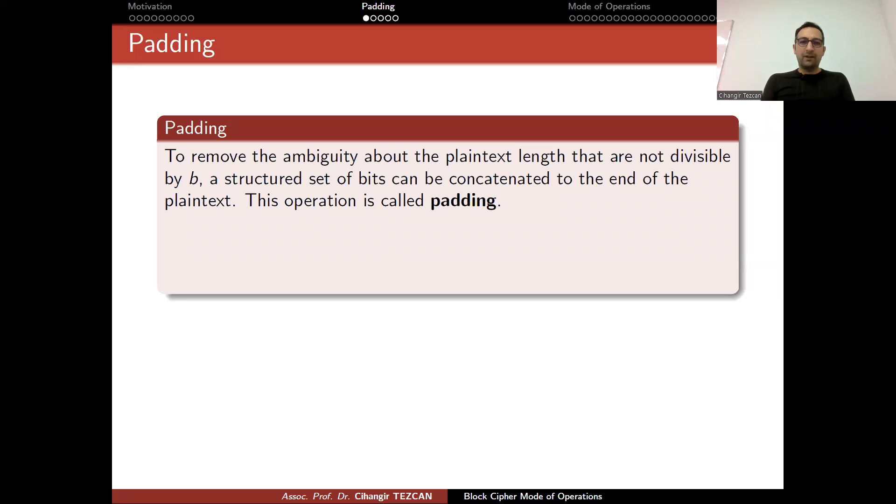We had two problems when using block ciphers. One question was how to encrypt plaintexts larger than a single block, which we'll answer with modes of operation. The second question was what to do when the plaintext is not a multiple of the block size. For example, if your block size is 64 bits, what happens when you want to encrypt 10 bits? Filling the remaining bits with zeros causes a problem because it introduces ambiguity. The person who decrypts the ciphertext and sees many zeros at the end cannot be sure if they're from the padding or the original plaintext. To remove this ambiguity, a structured set of bits can be concatenated to the end of the plaintext. This operation is called padding.